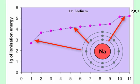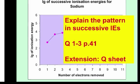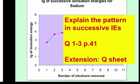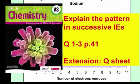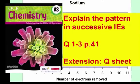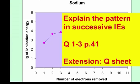If you've got the black book, try to explain this pattern in ionisation energies, then look at questions one to three on page 41. If you do this before the lesson, you can do the extension with me in the lesson — see how much of this you can do now.